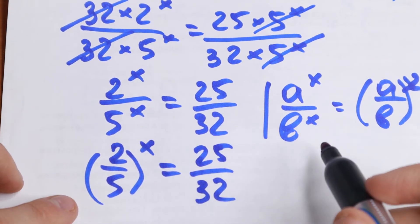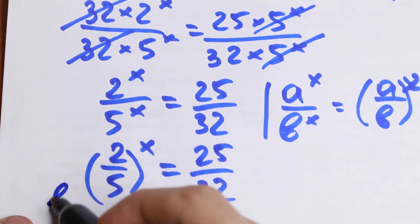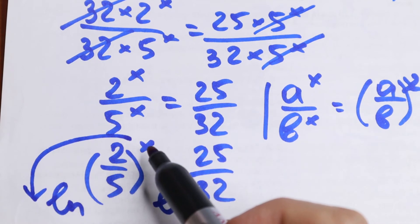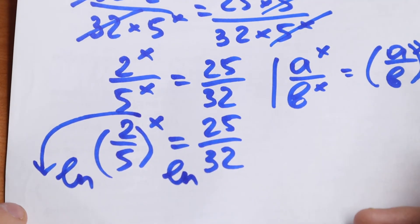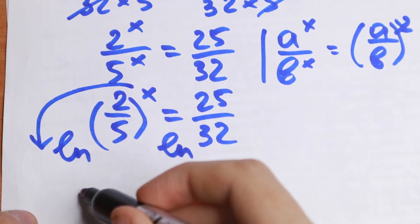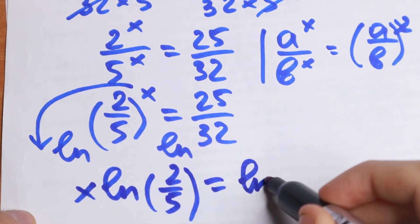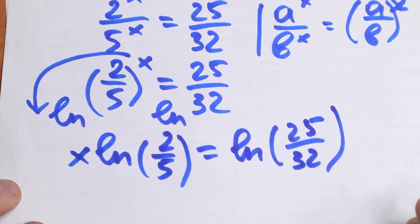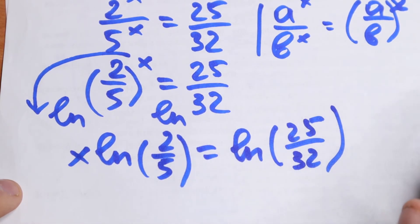This is now a classic logarithm case. If we take the natural log of both sides, we can bring x down to the front using the log power property. So x jumps to the beginning, and we have x times the natural log of 2 over 5, equal to the natural log of 25 over 32. Without a log it would be hard to solve, but with log it works perfectly.